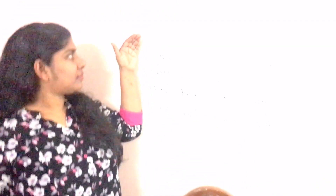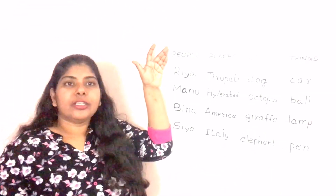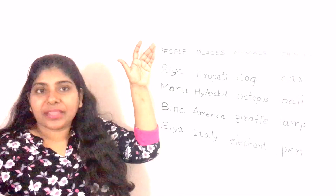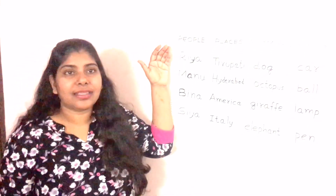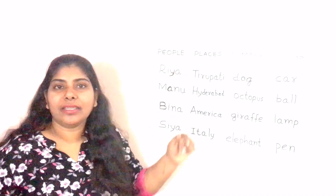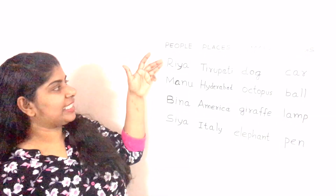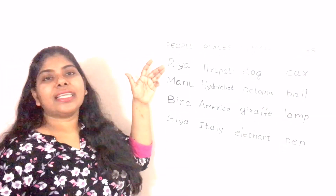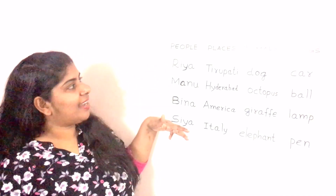I have written some more examples here. Before that, I am going to revise the definition of nouns one more time. Nouns are the names of people, places, animals and things. Look here — under people, the examples are: Rhea, Manu, Beena, Sia.